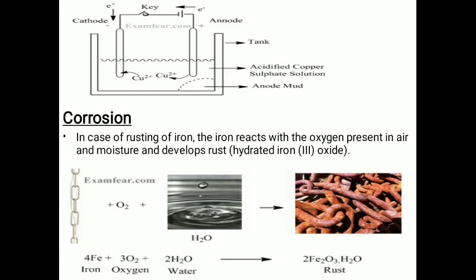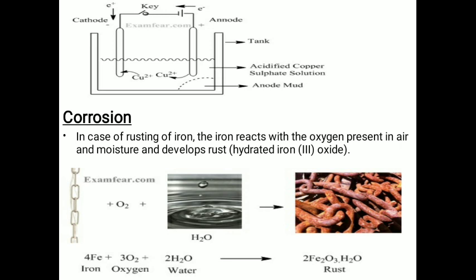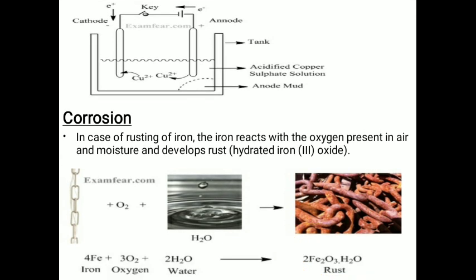The next topic is corrosion. Corrosion means when any metal reacts with air, water, or moisture it forms a metal oxide on the surface that degrades the metal. In the case of rusting of iron, iron reacts with oxygen and water in moisture and develops rust — hydrated iron oxide, Fe₂O₃ — which is called rust.